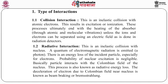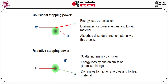This figure shows the two types of interactions: collisional interaction and radiative. There are two different stopping powers. First, energy loss by ionization, which dominates for lower energies and low-Z material — absorbed dose is delivered to material via this process. Second is radiative stopping power — scattering mainly by nuclei due to the Coulomb field, with energy loss by photon emission, that is Bremsstrahlung production — dominates for high-energy electrons and high-Z target material.